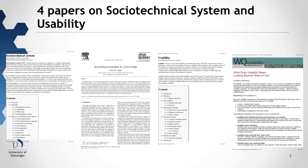One paper is about socio-technical systems in general, coming from Wikipedia. One is about socio-technical principles for system design, which goes into quite some detail about how system design should be done in this context. We also have a more general paper on usability, and a more specific paper about what usability means, looking beyond the ease of use issues.